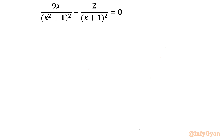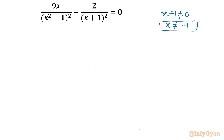Let us get started by writing the domain. The denominator cannot be 0. So, if x + 1 is not equal to 0, then we can conclude x is not equal to negative 1. Similarly, the second bracket, x² + 1, also cannot be equal to 0, so x cannot be equal to plus or minus i.